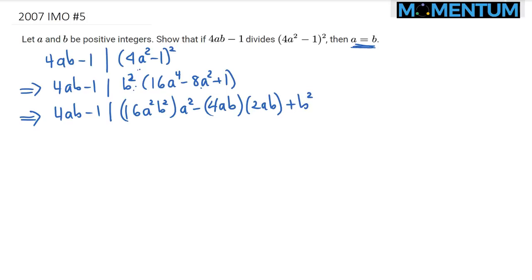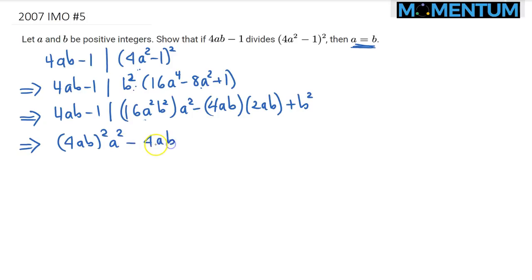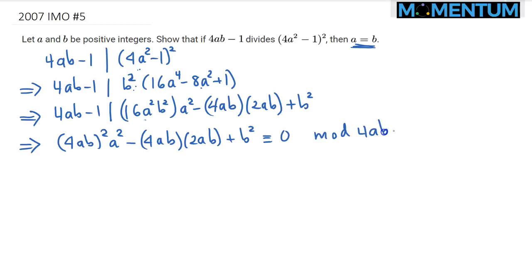Now, why did we do all this? Let's go one more step. At this point, that might be the right moment to turn into modular arithmetic. So we have this expression: 16A squared B squared, which is just 4AB squared. And then we still have — we have 4AB times 2AB plus B squared. And our expression is supposed to divide it perfectly, right? So this is congruent to 0 mod 4AB minus 1.